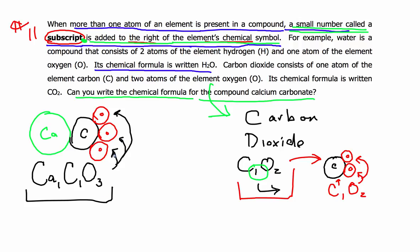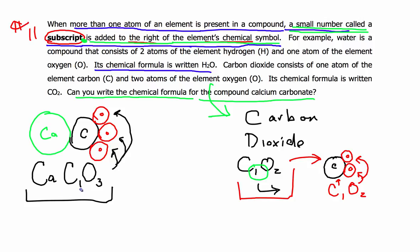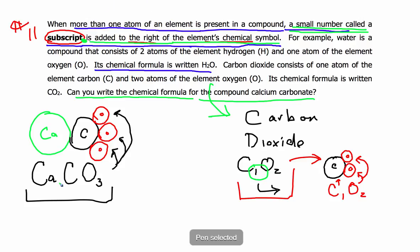Any time you don't see a subscript written with a chemical symbol, remember it's understood to have a subscript of 1. This will help you keep track of how many atoms and which atoms are actually in a molecule when we're using chemical formulas to describe them.